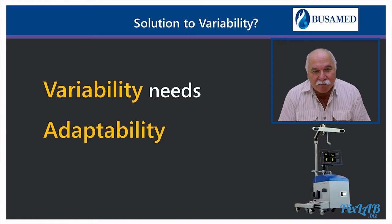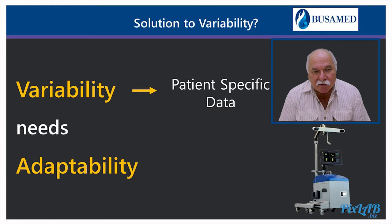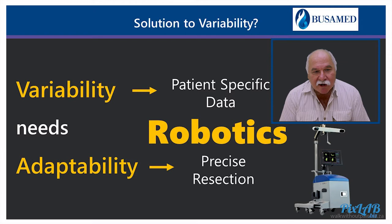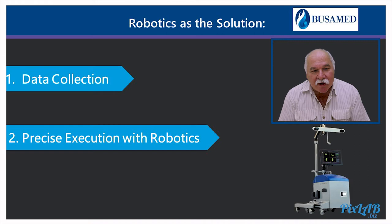Our big problem in knee surgery is variability — personal variability of all patients. Variability needs adaptability, and we have to look at specific data of individual patients. In adaptability, we need precise resection. Robotics is the ultimate answer and satisfies both needs. As the solution, we look first at data collection and secondly at precise execution with robotics.